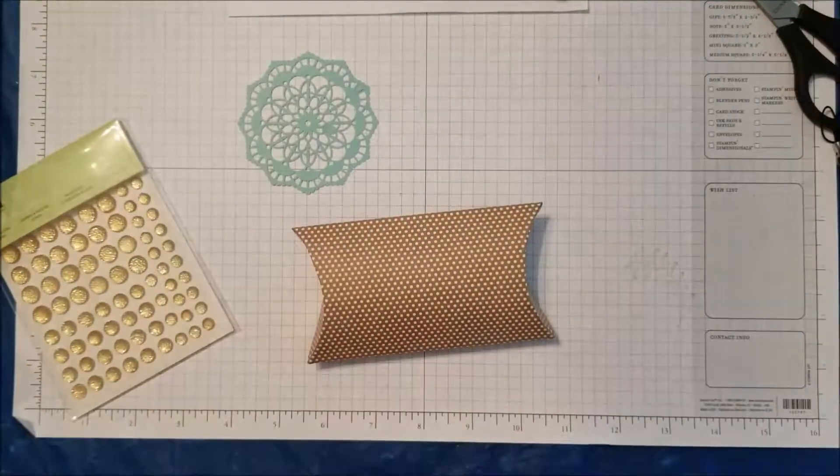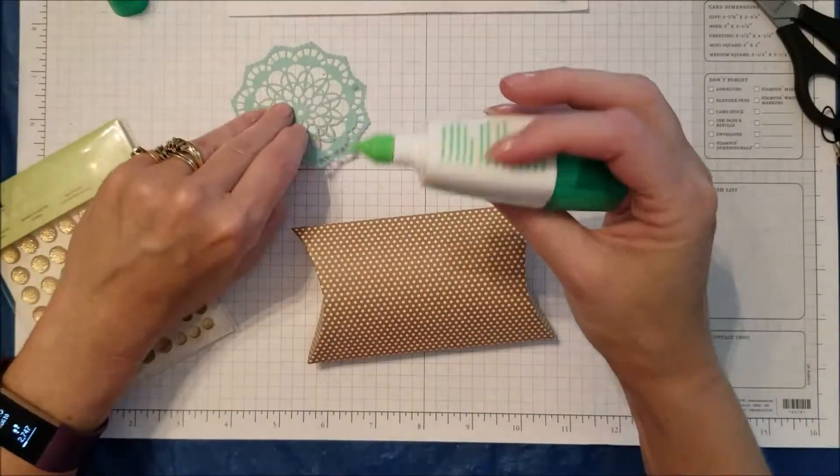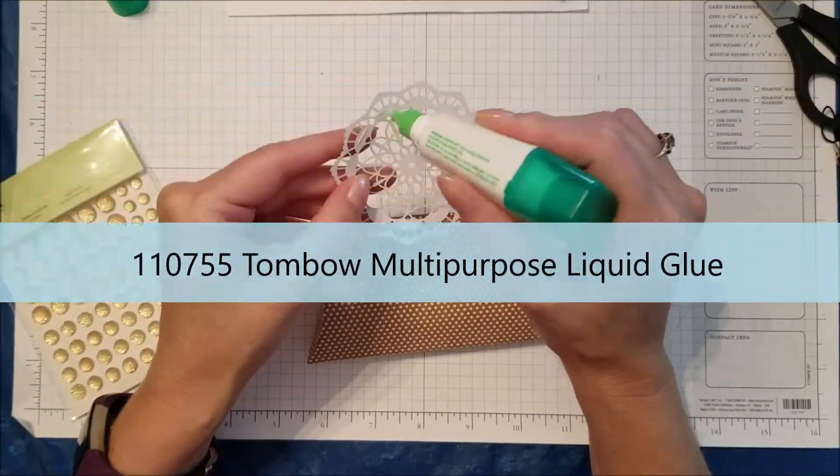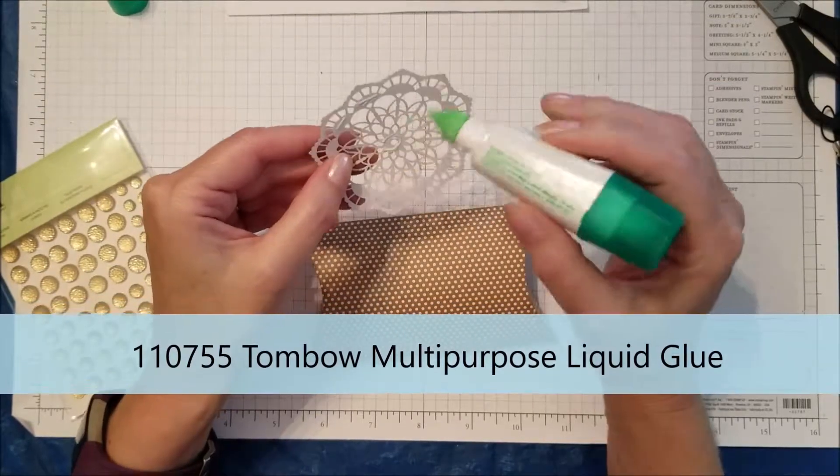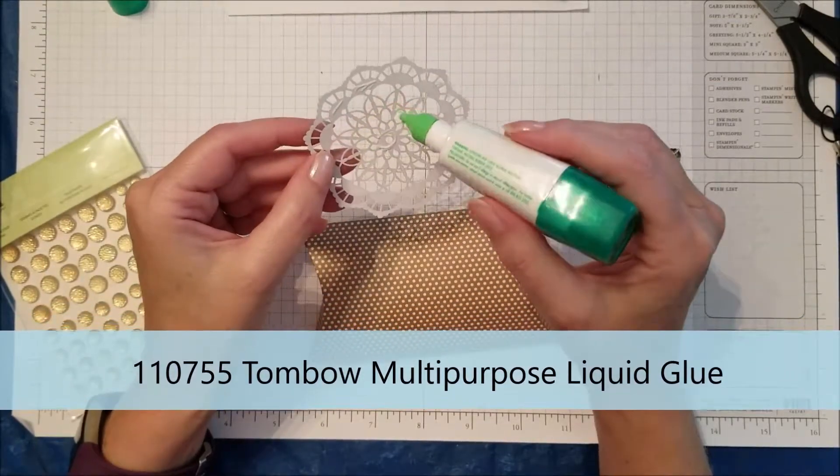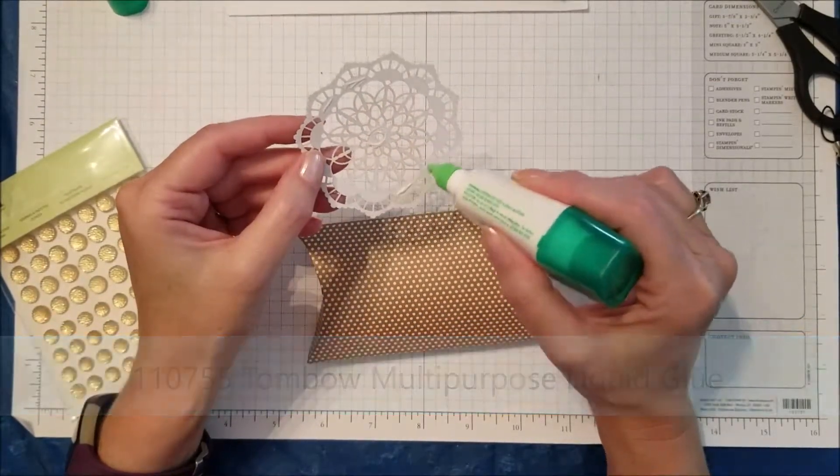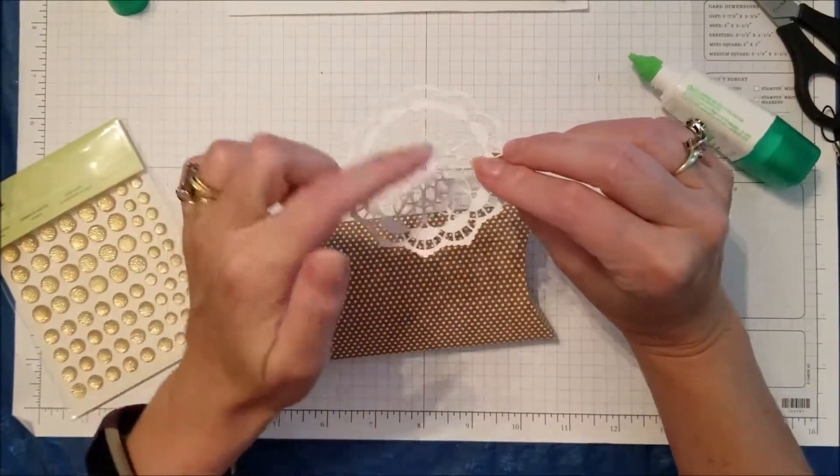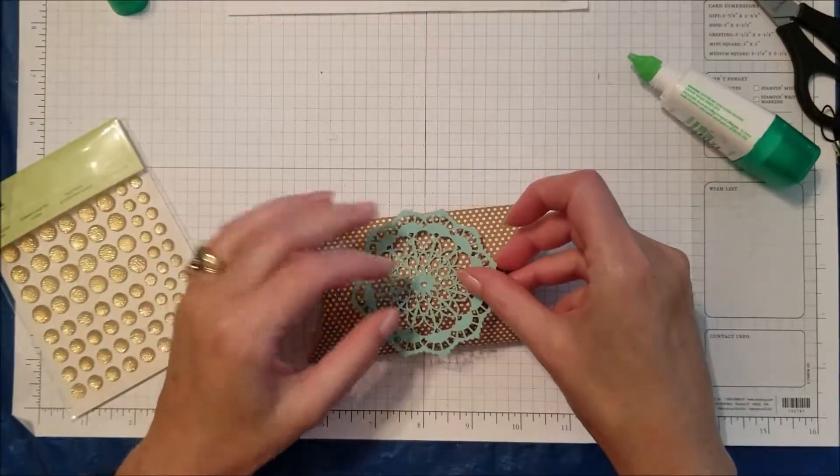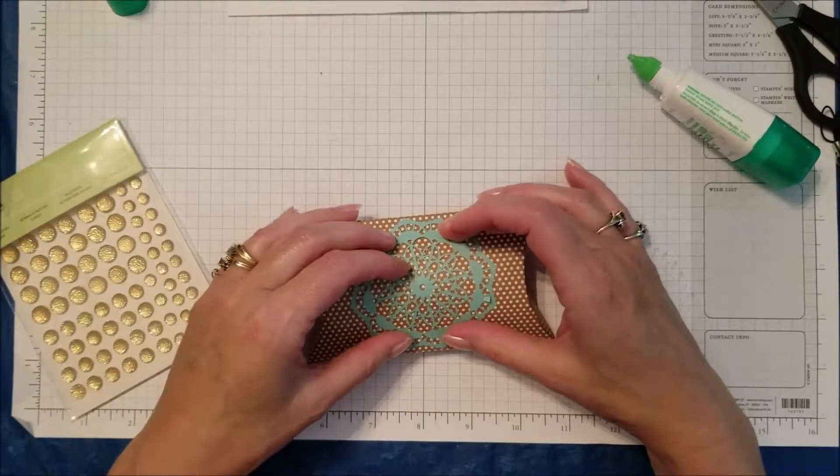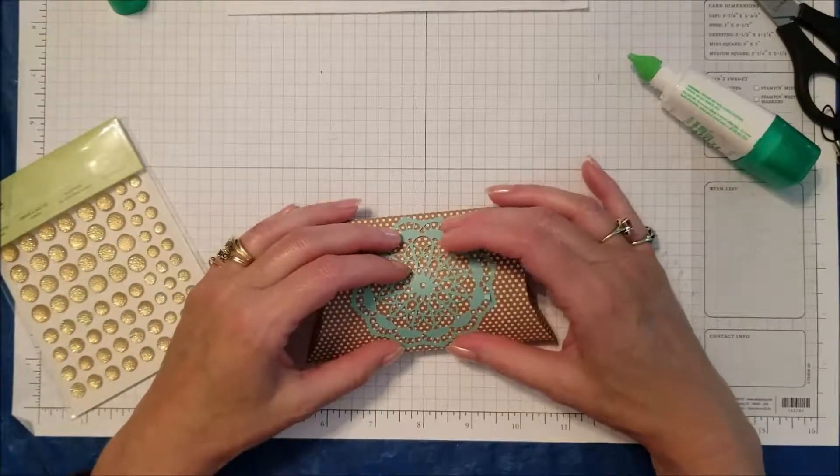I'm going to take a coastal cabana one and I'm just going to use my Tombow glue. I don't want the whole thing glued down, so I'm just going to do a couple of things on the edge here, a little bit in the middle and then a little bit on the top. The reason I'm doing that is because then I can kind of go like that and hold it down for a minute and it's going to hold itself in place very nicely.